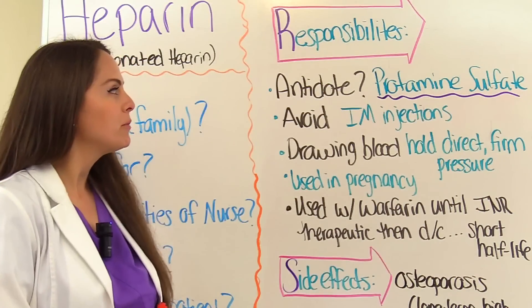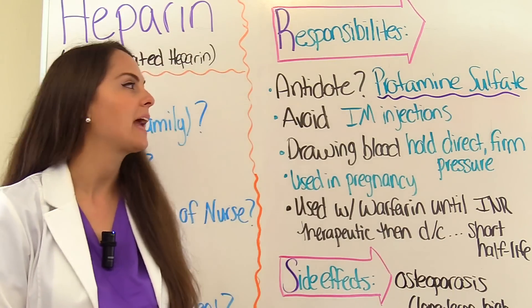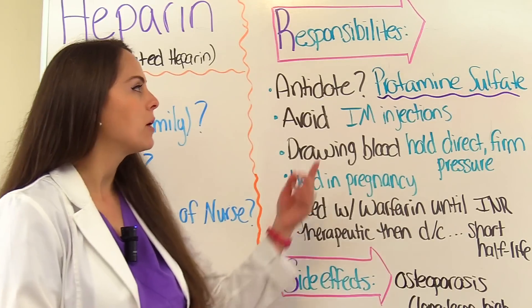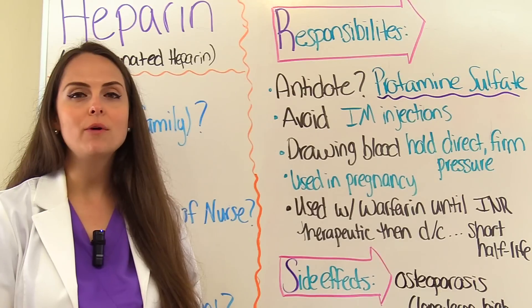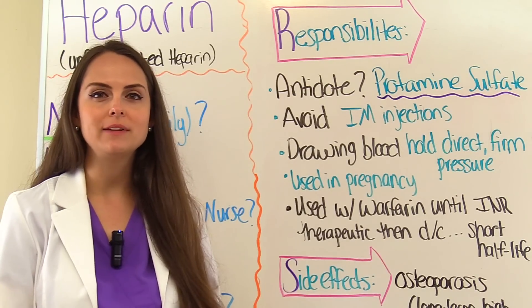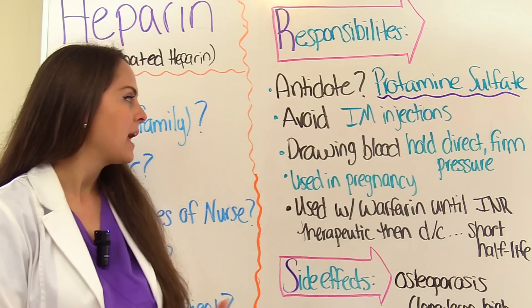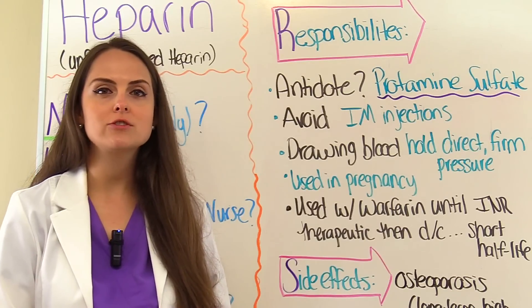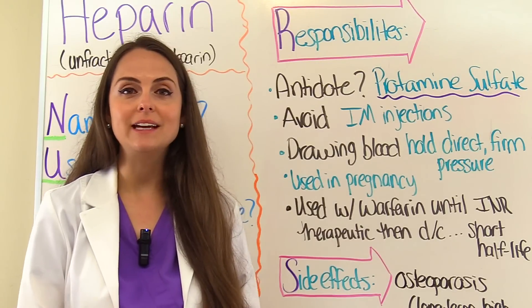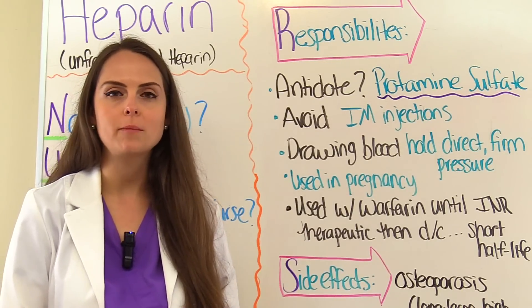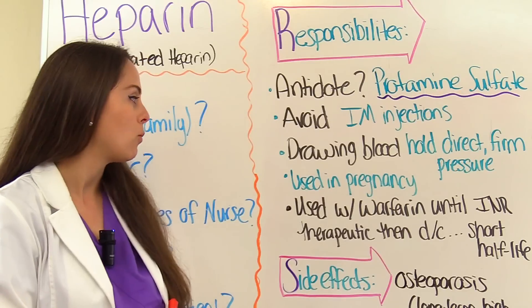Some other things to remember with heparin responsibilities: always know the antidote. The antidote for heparin is protamine sulfate. Whenever giving medications, always avoid the IM route because these patients are at risk for bleeding and take a while to clot. When drawing blood, hold firm direct pressure after drawing because they can bleed for a while — we want to prevent a hematoma from forming, and teach the patient about this as well, especially if they get injured.